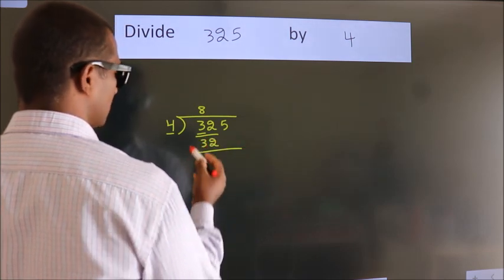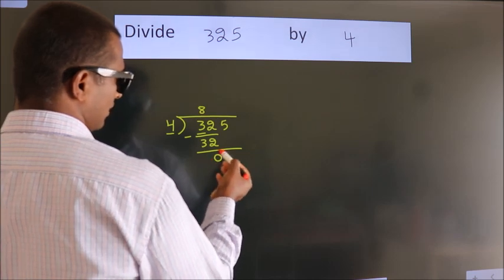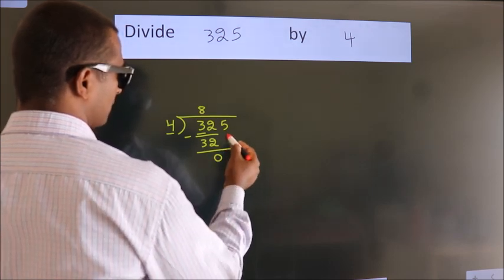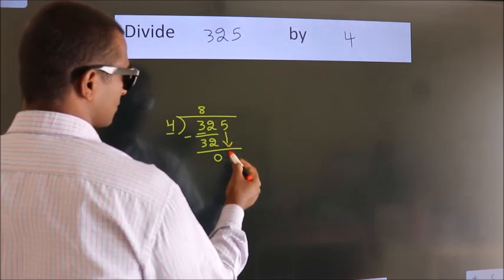Now we should subtract. We get 0. After this, bring down the beside number. So, 5 down.